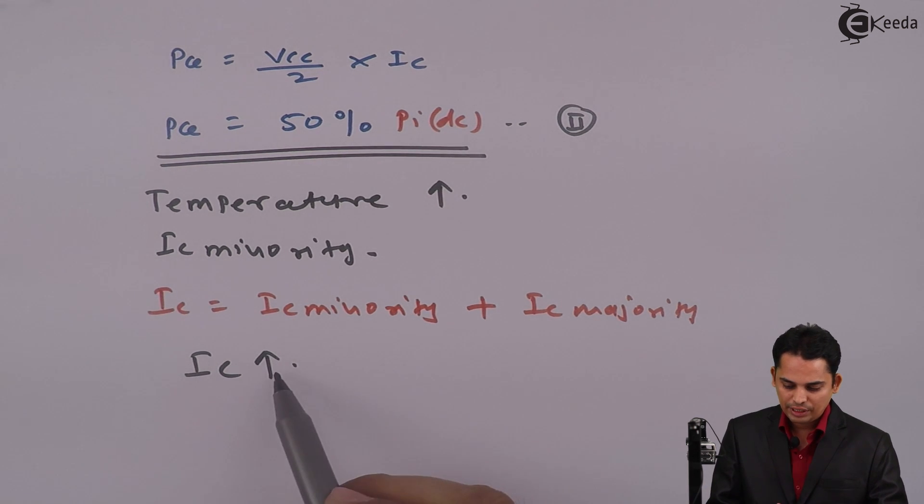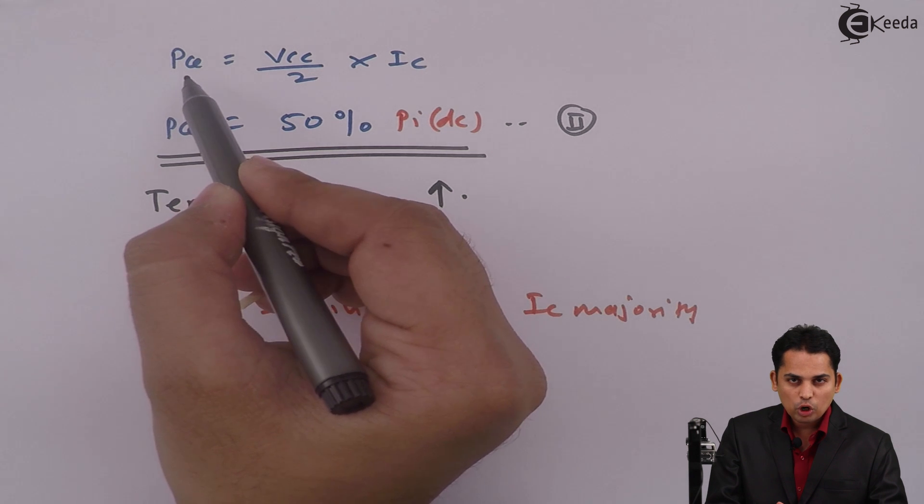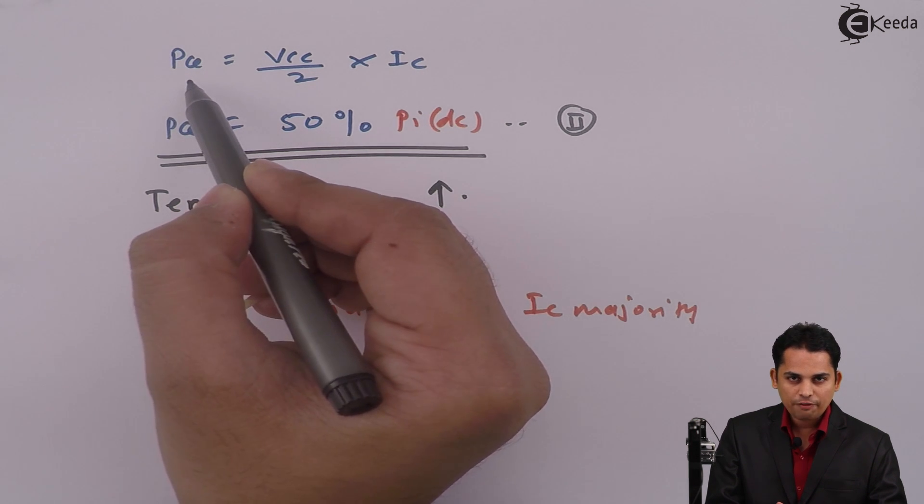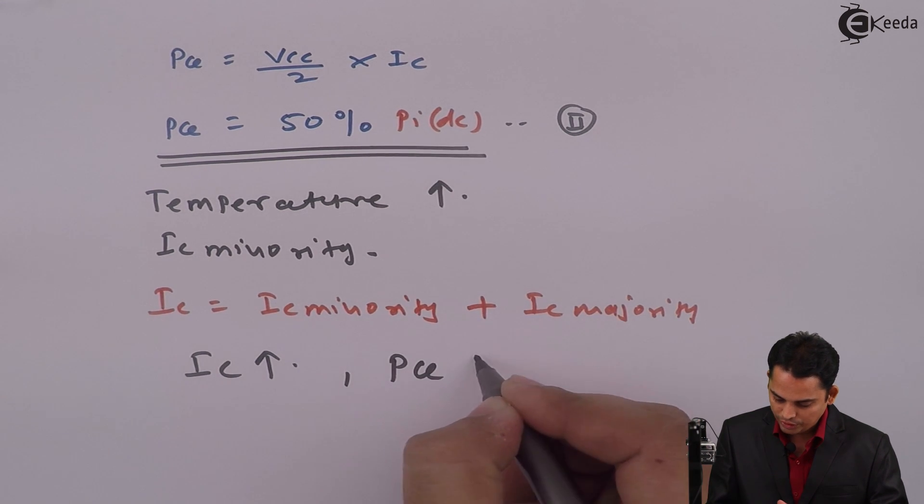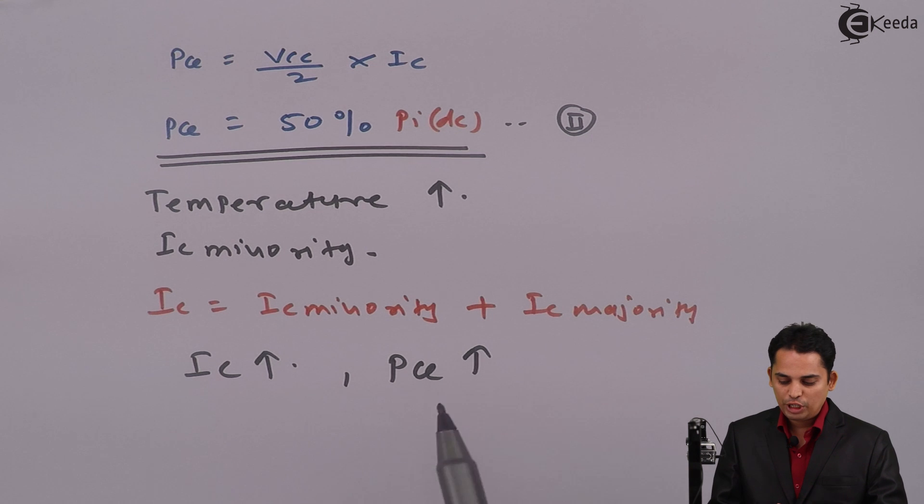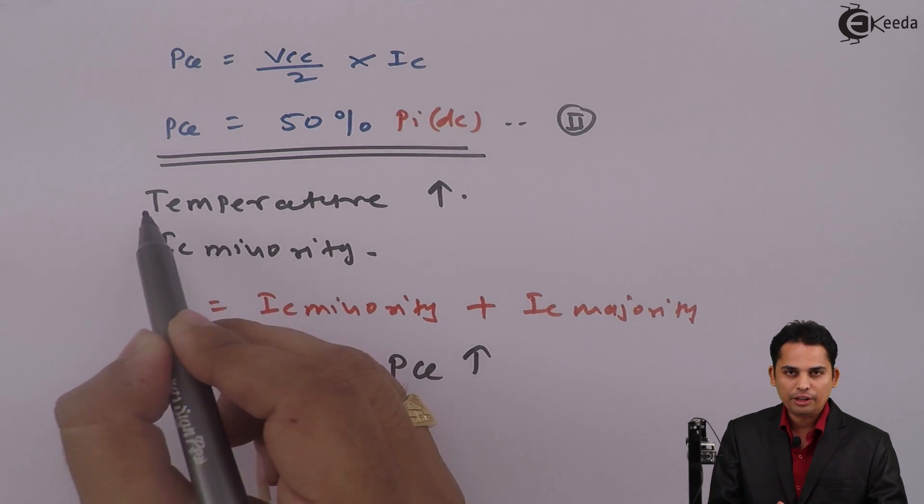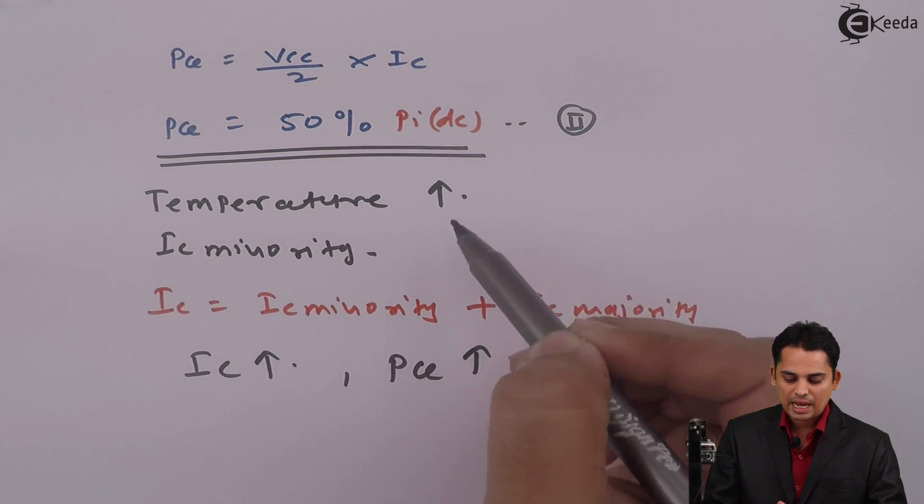As IC is increasing, power drop across transistor, which is a function of IC, will increase. And hence, we can write that PQ is increasing. As PQ is increasing, temperature will increase. Temperature increases, IC increases. IC increases, PQ increases.